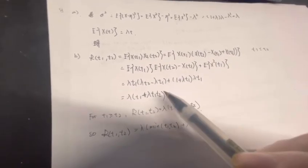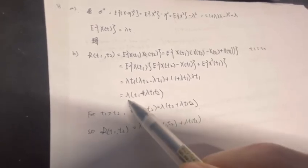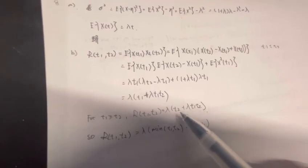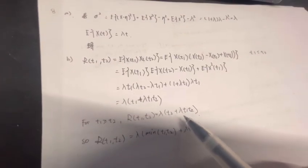So the final result will not look like this, it will be like this. It will be lambda t2 plus lambda t1 times t2.